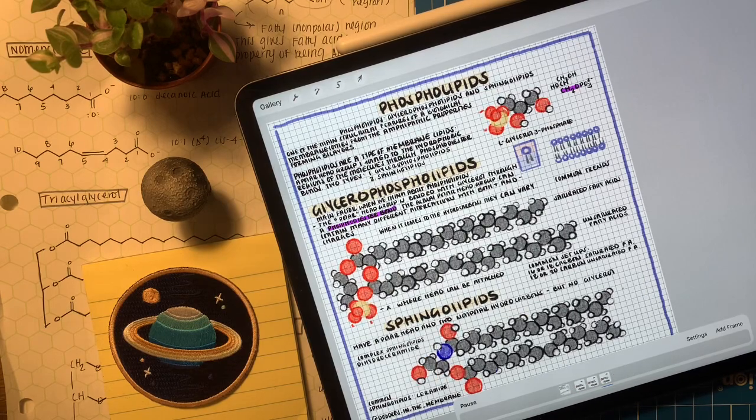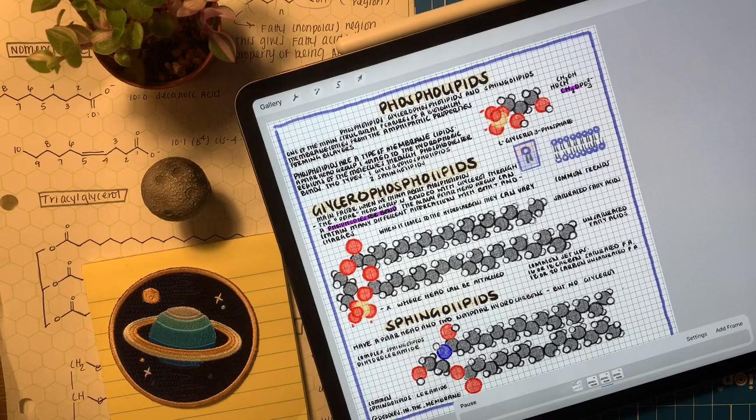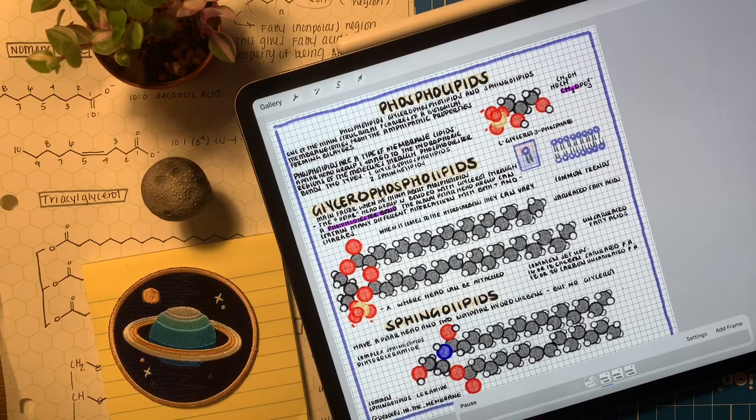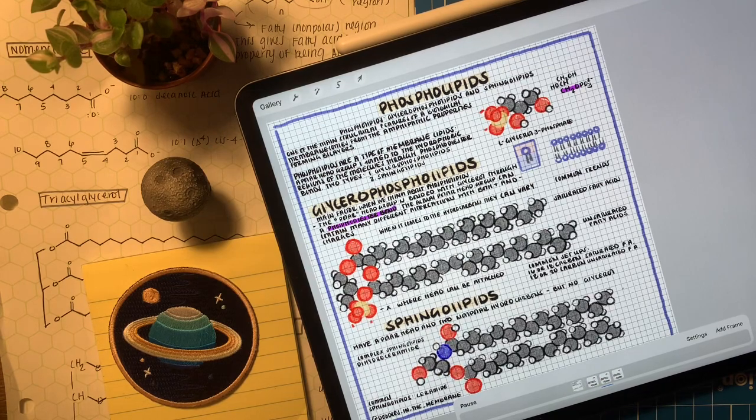Then we have sphingolipids. Sphingolipids are really similar to glycerol phospholipids. The only difference is its head group is not made from a glycerol backbone.